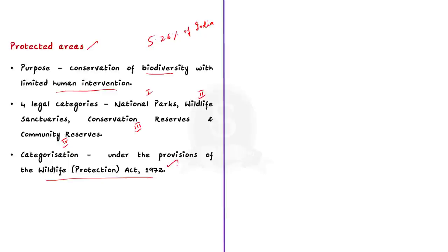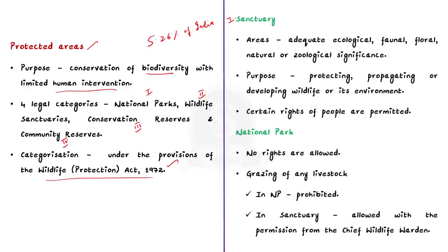Let's see these four protected areas one by one. First, sanctuary. A sanctuary is an area which has adequate ecological, faunal, floral, natural or geological significance. It is declared for the purpose of protecting, propagating or developing wildlife or its environment. Wildlife sanctuaries in India are particularly declared for a particular species of animals, but can also be declared as a wider area covering different species. Importantly, certain rights of people living inside the sanctuary could also be permitted by the government.